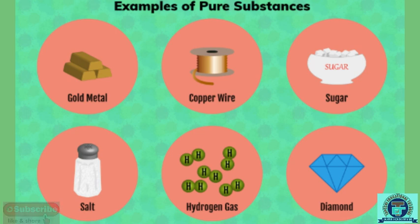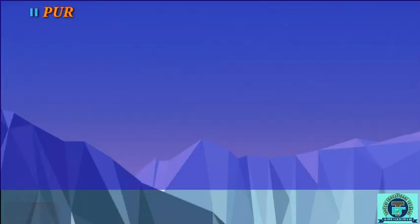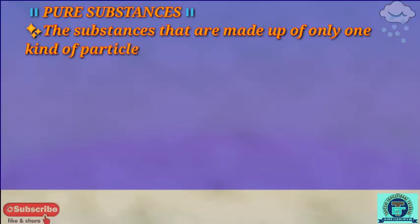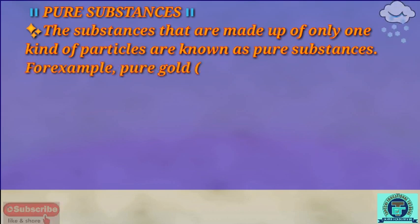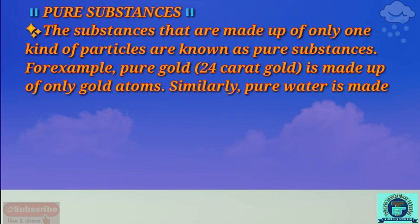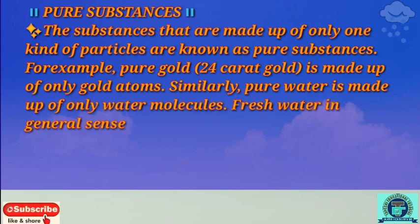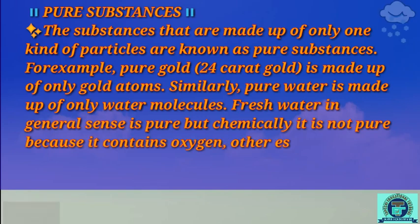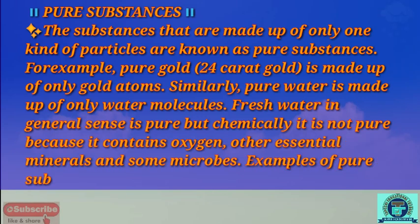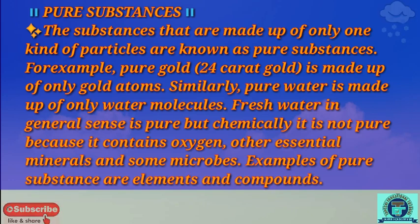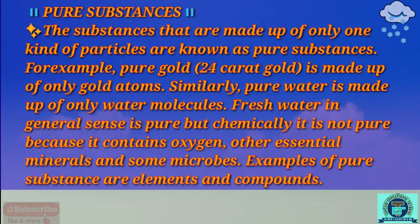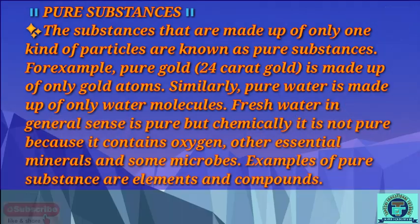Now let's understand pure substances. The substances that are made up of only one kind of particles are known as pure substances. For example, pure gold — that is 24-carat gold — is made up of only gold atoms. Similarly, pure water is made up of only water molecules. But fresh water in the general sense is not chemically pure, because it contains oxygen, other essential minerals, and some microbes.